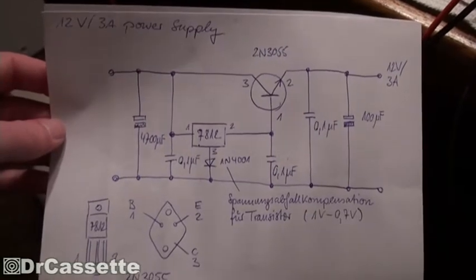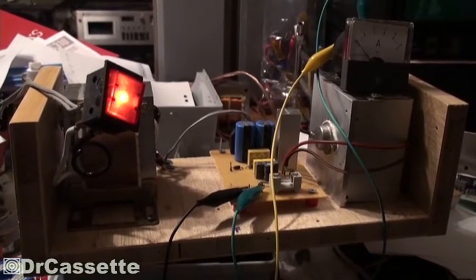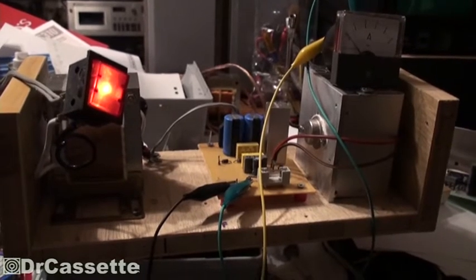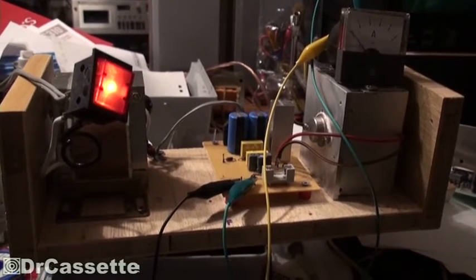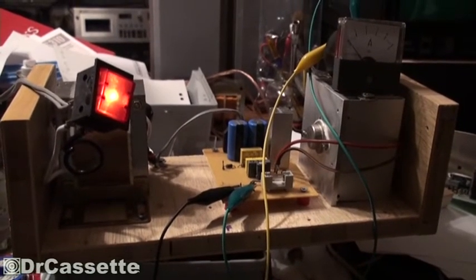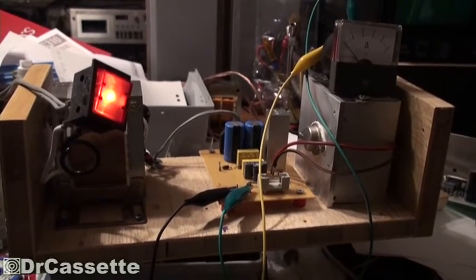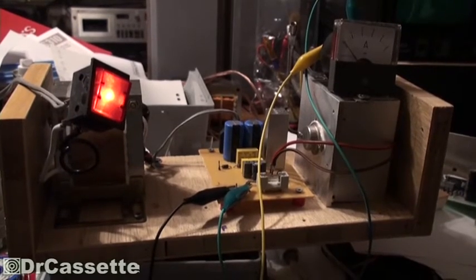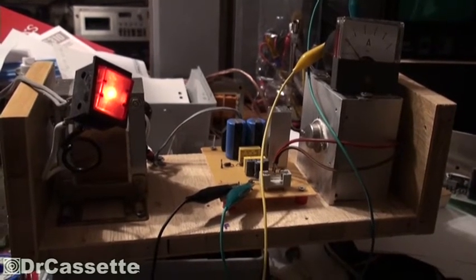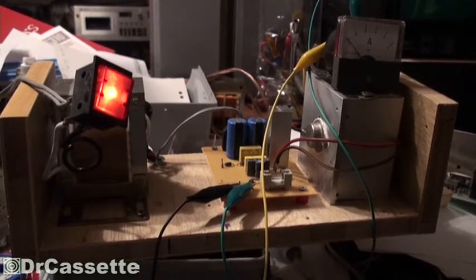Now we are doing that because we have basically, you can kind of tell by the symbol, we have another diode going on right here. So we have another 0.7 volts voltage drop going on. So we're raising up the output of the regulator so that we can in the end have our 12 volts. So that's what that is all for.